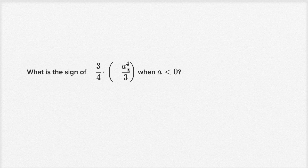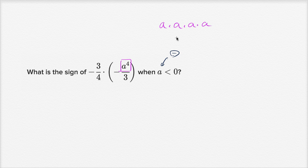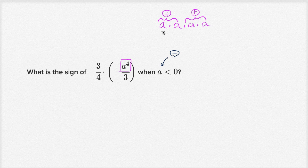What is the sign of negative 3-fourths times negative a to the fourth over 3, when a is less than zero? They're telling us a is negative. We have a negative number to the fourth power: a times a times a times a. If you have an even number of negatives being multiplied, the result is positive. Negative times negative is positive, and negative times negative again is positive, so a to the fourth power is going to be positive.